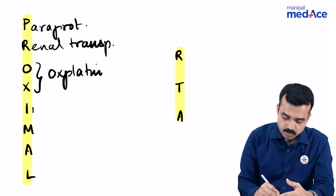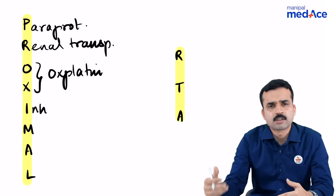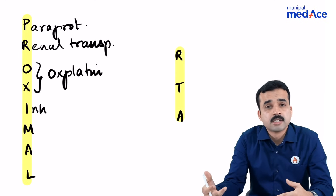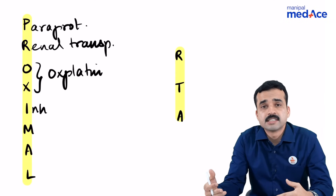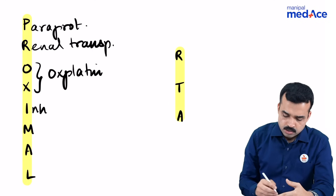I stands for inherited causes like galactosemia, hereditary fructosemia, Wilson's disease, and Lowe's syndrome, and so on.